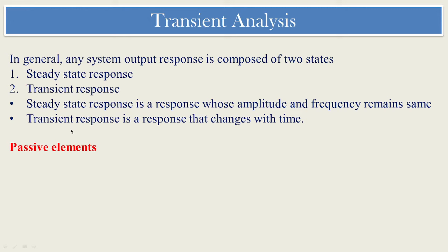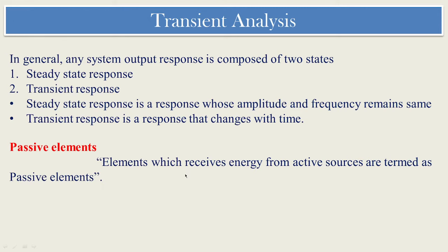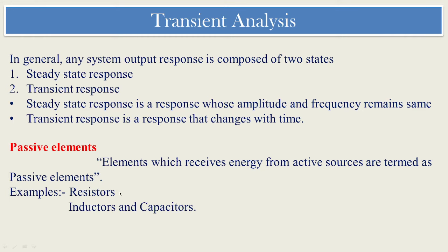Elements which receive energy from active sources are termed as passive elements. Examples include resistors and capacitors. Resistors help in a circuit to dissipate energy. The main cause for transients in electrical and electronic circuits is because of inductors and capacitors — inductors store energy in magnetic form, and capacitors store energy in electrostatic form.